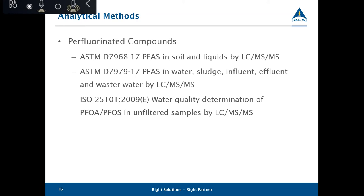There are some other methods ALS does not offer, including an ISO method developed for analysis of linear isomers of PFOA and PFOS using internal standards but no isotope dilution. Some of these methods have been validated by various EPA regions but have not gone through multi-lab validation. At ALS CalSO, we offer EPA 537 and the updated 537.1 for drinking water, our DOD methodology, and our in-house modified EPA 537. The Michigan lab will offer a very similar methodology.